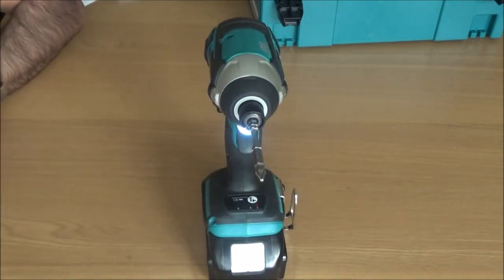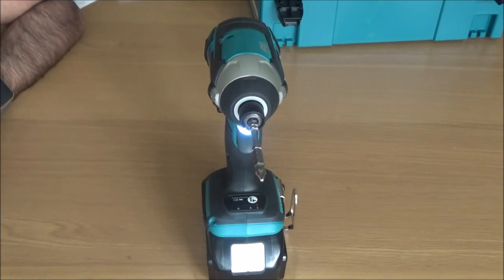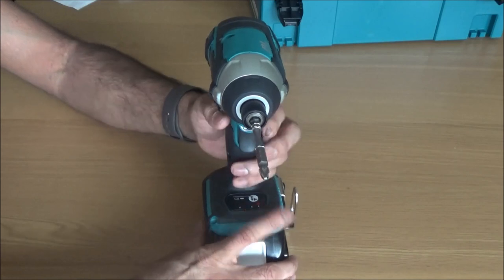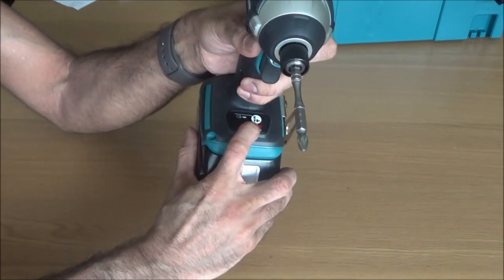The job light would stay on for 10 seconds after you've let go of the trigger. But if you don't want that on you can turn that off. How you turn that off, see the button there, so what you do is push it.